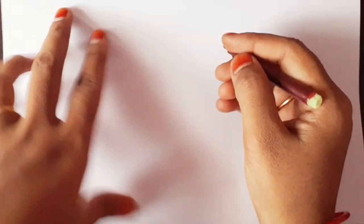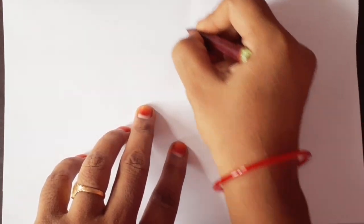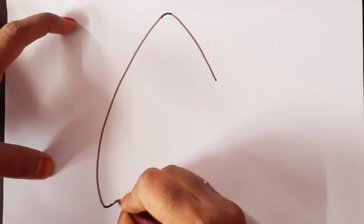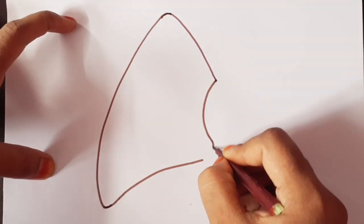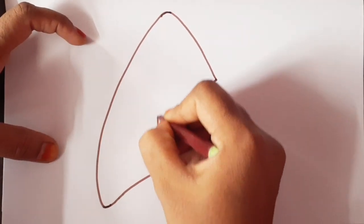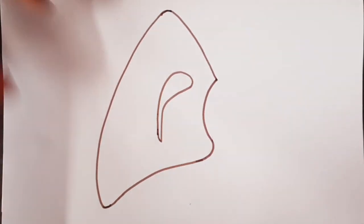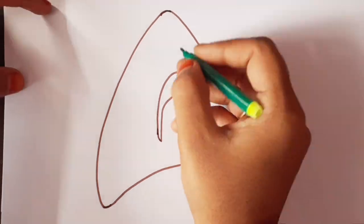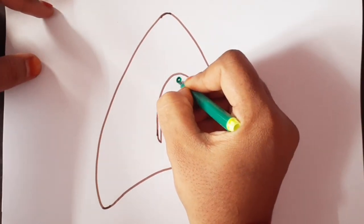Today I am showing the medial sternal surface of the left lung. This is the apex, posterior border, inferior border, and this is the cardiac notch with lingula. This is the root of the lung. By the presence of this, it is divided into an anterior part and a posterior part. The anterior part is known as the medial sternal part and the posterior part is known as the vertebral part.